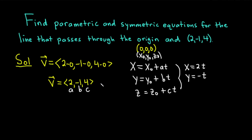And if we take z0 to be 0, we have z equals 0 plus ct. So c is 4, so we just get 4t.